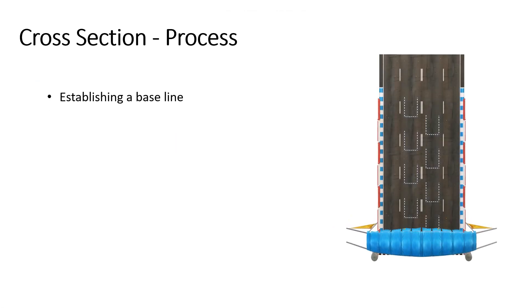The process of creating a cross section typically involves the following steps. Initially, we have to establish a cross section line — surveyors mark perpendicular lines to the alignment being surveyed at regular intervals. These lines are known as cross section lines or station lines. The next step is to take measurements: along each cross section line, the surveyors measure the ground level at predetermined points using leveling instruments or total stations.